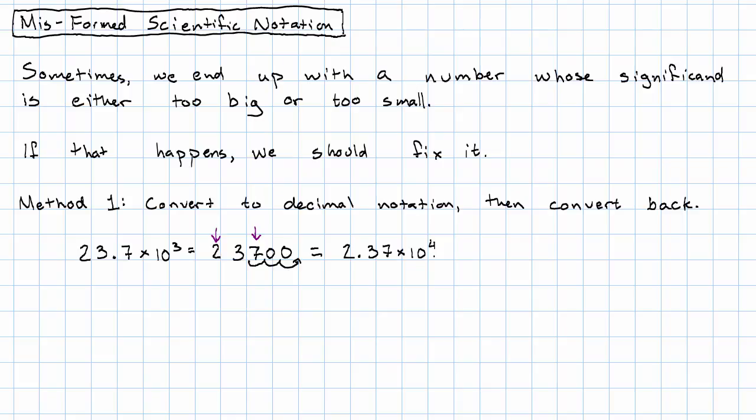Okay, so that method works, but it's sometimes not very practical. For example, let's say we encounter this number, 0.0041 times 10 to the 98th. Converting that back to decimal notation is going to involve counting to 98 and putting in at least 90 zeros. I would really prefer a method that doesn't involve counting to 90. And in fact, there is a method.